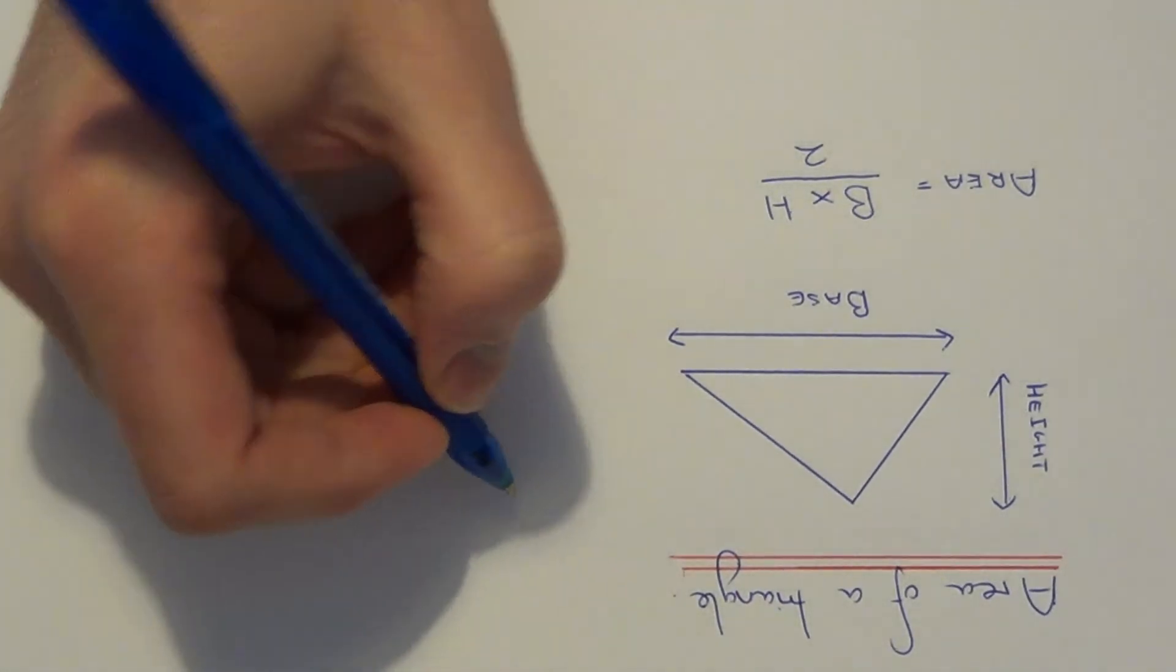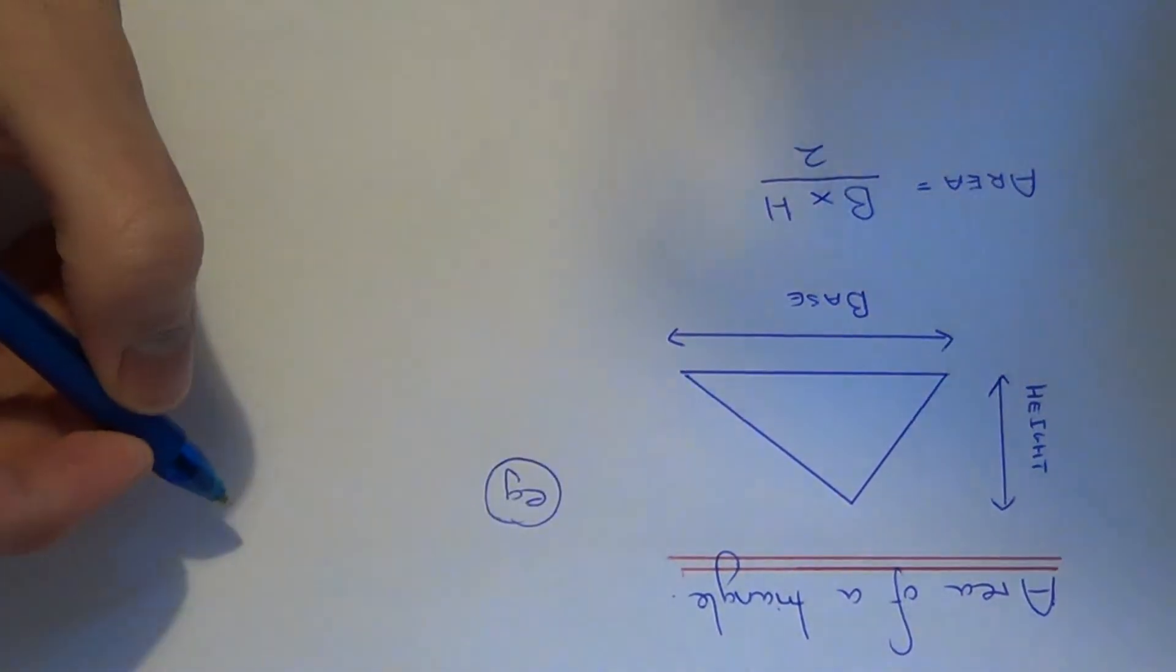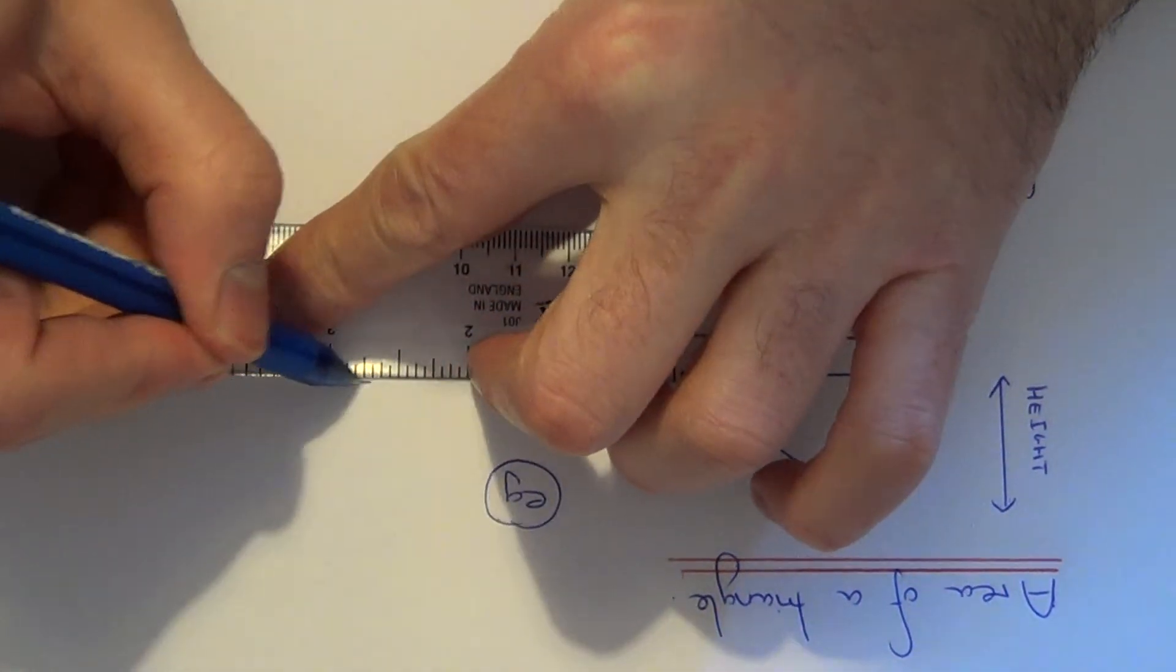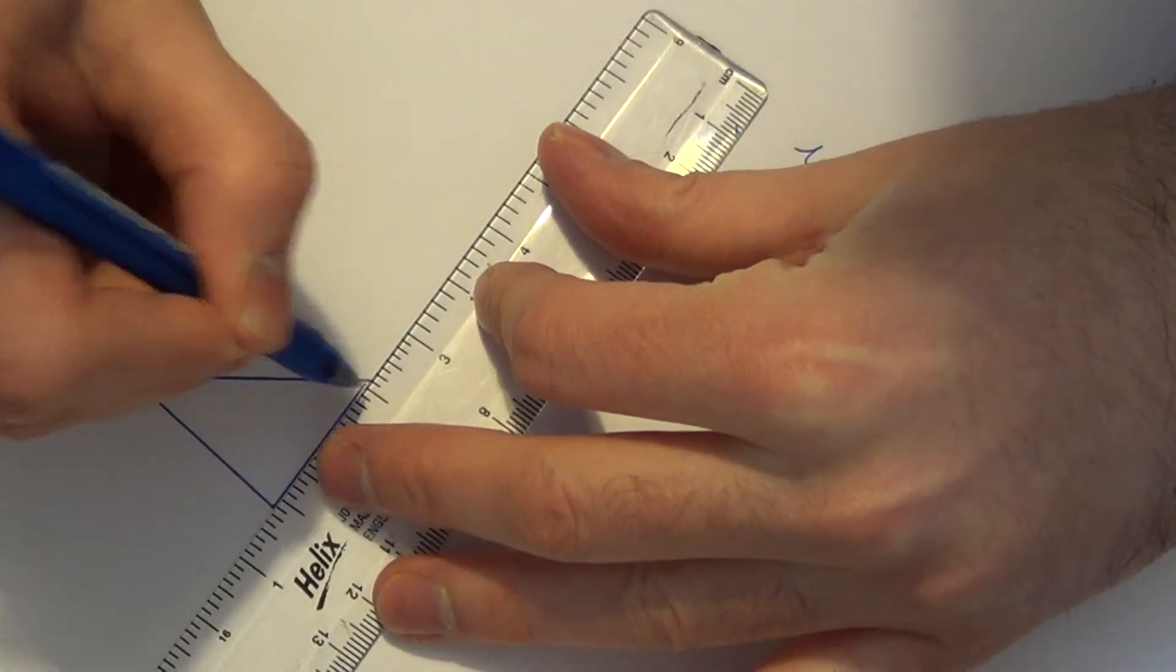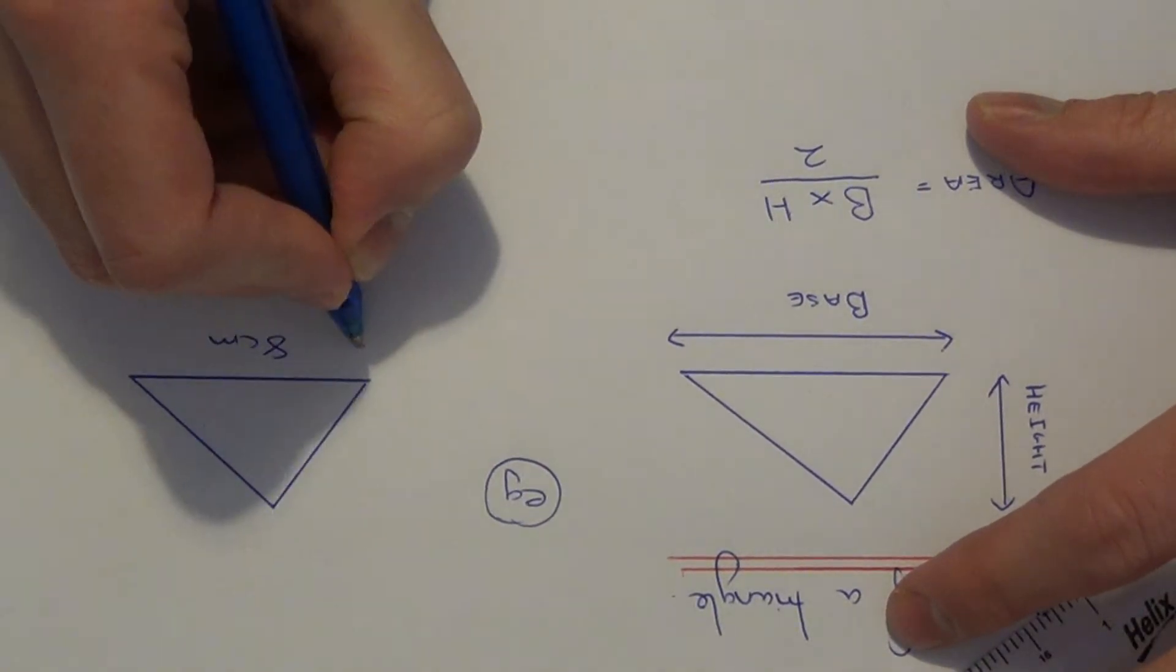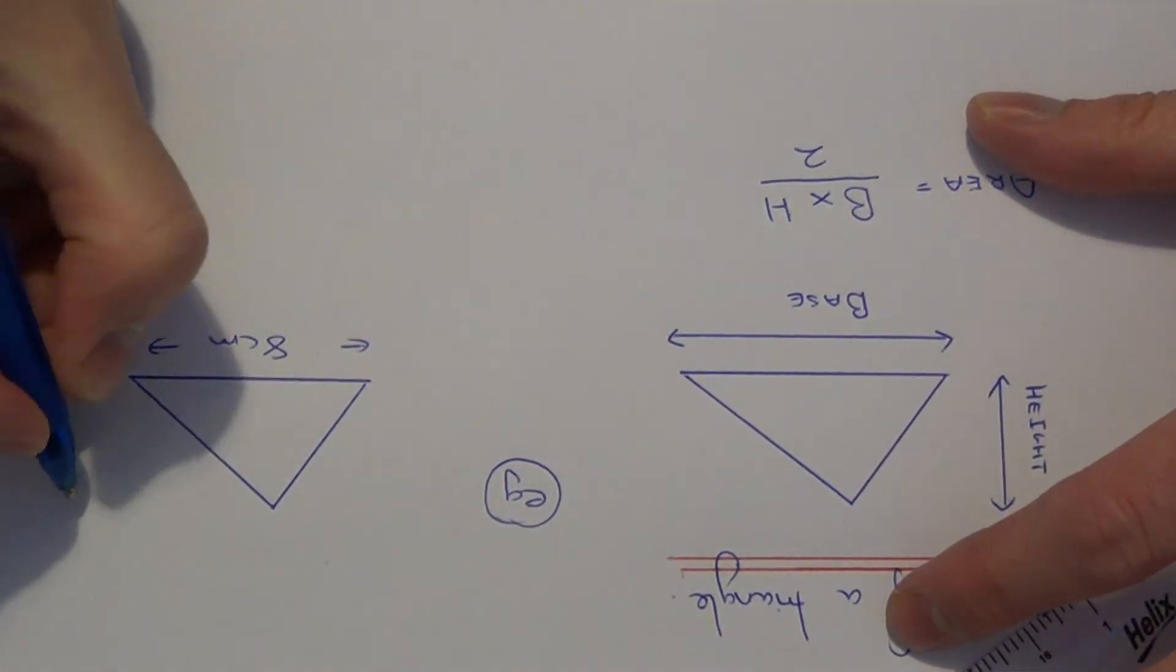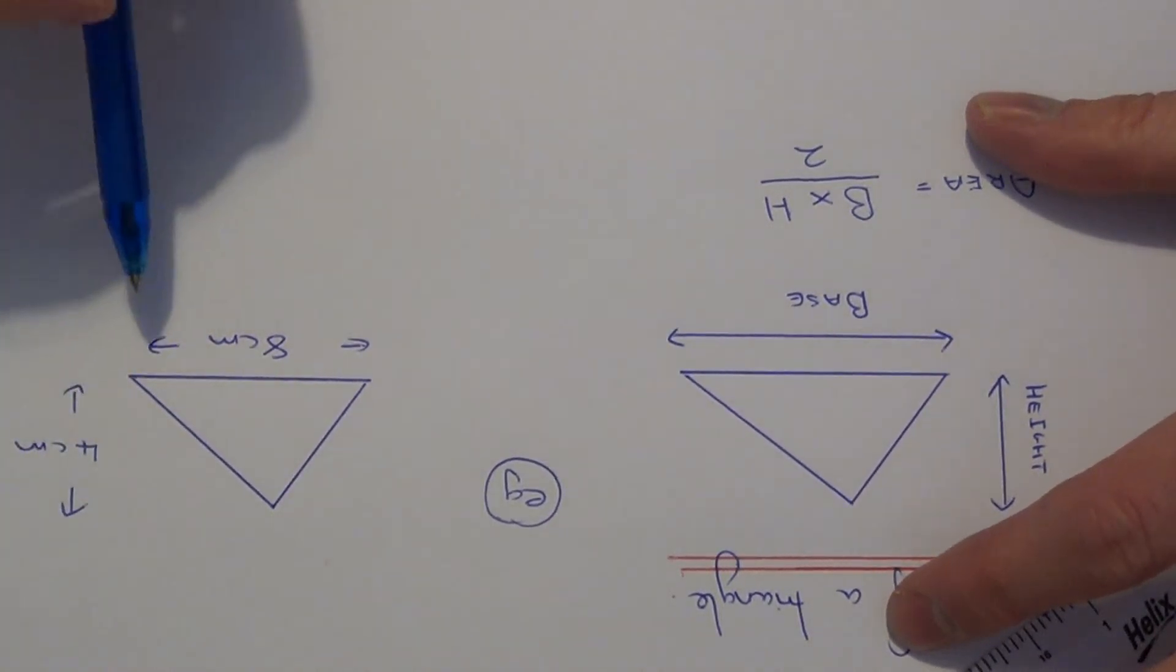Let's take a look at an example. We have a triangle where the base is 8 centimeters and the height—that's the perpendicular height—is 4 centimeters.